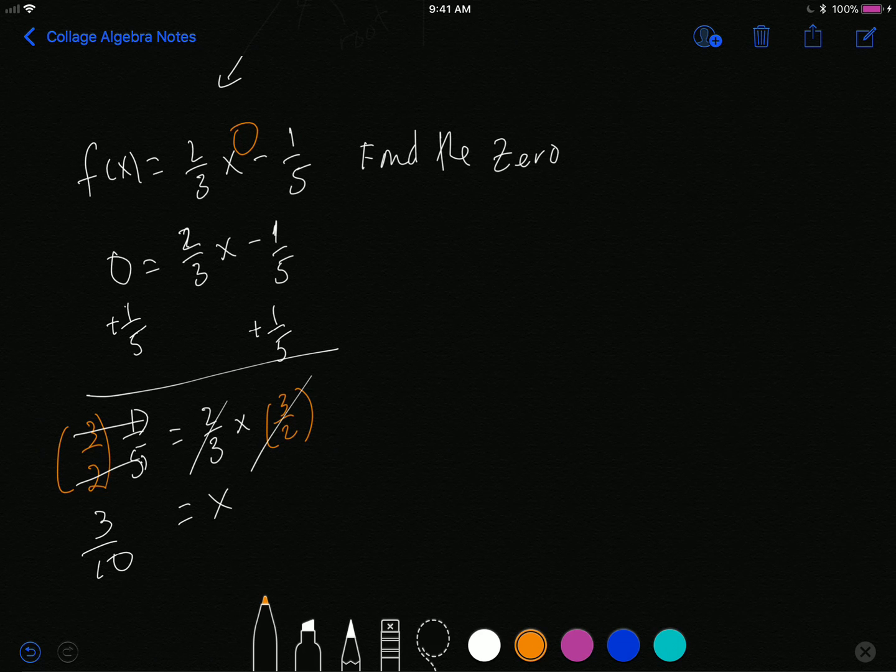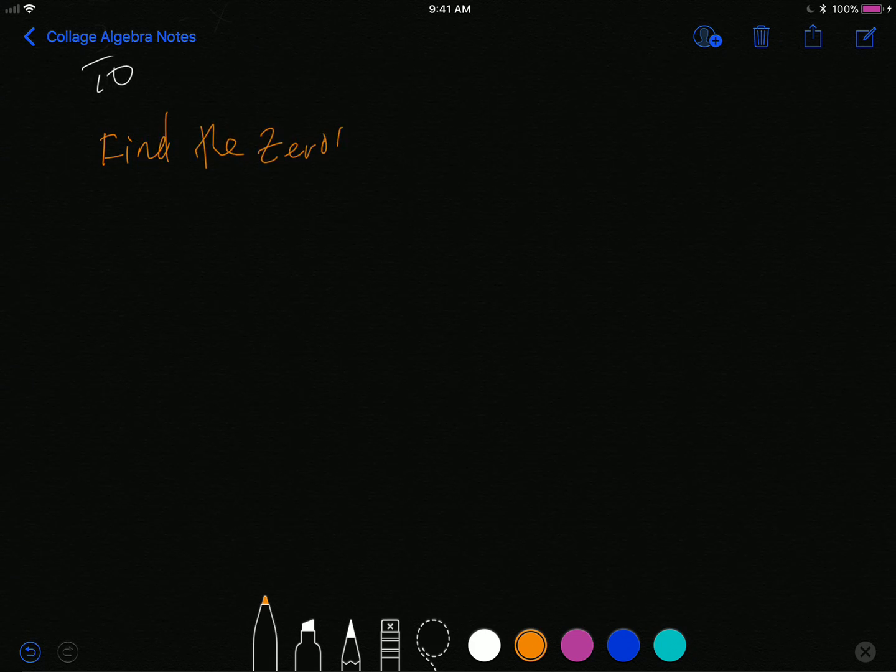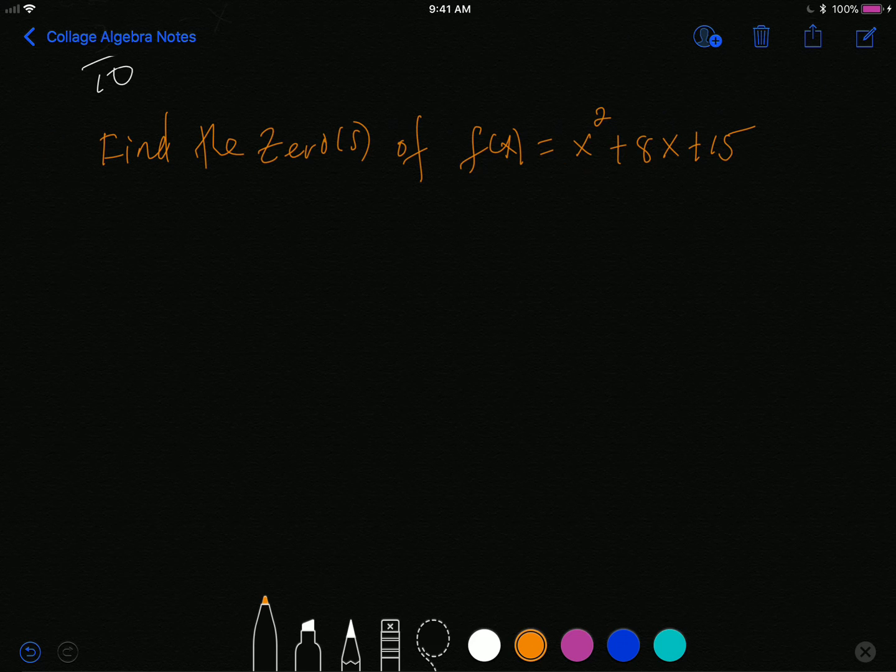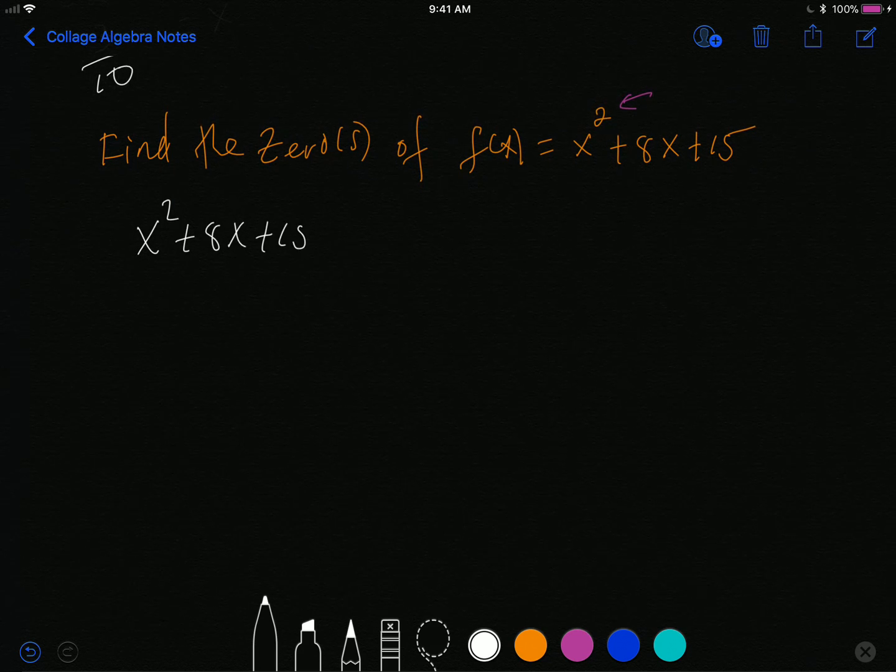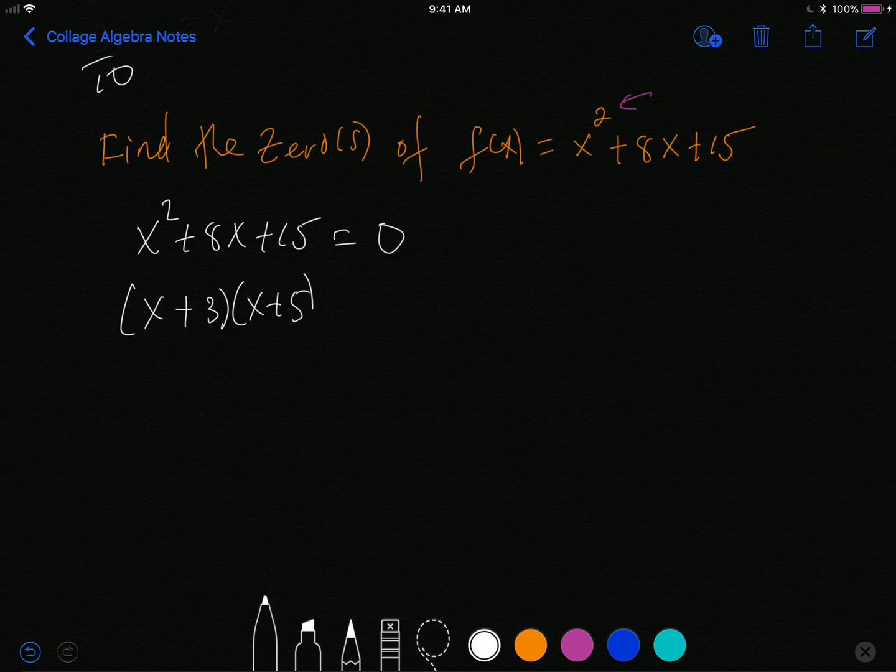For example, if I have to find the zero and I have f(x) equals x squared plus 8x plus 15. Now I have x to the second power. To solve this right here, and this is something that you will learn very quickly, once you have a power of x that's greater than one, normally you need some kind of technique to solve the equation. In this case I'm trying to find the zero, so I set it equal to zero. I have x squared plus 8x plus 15 equals zero.